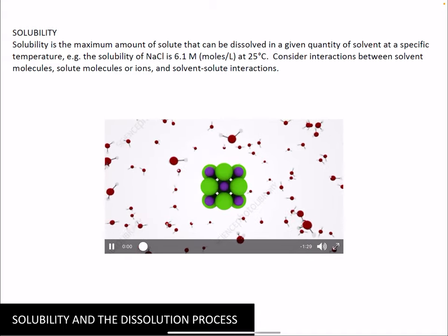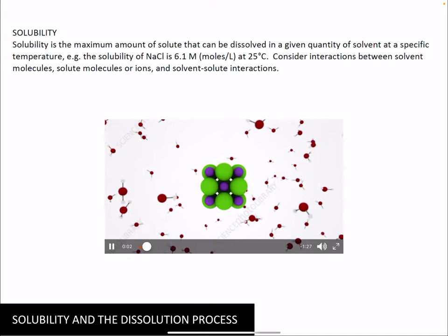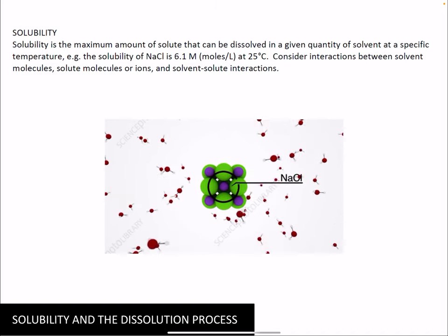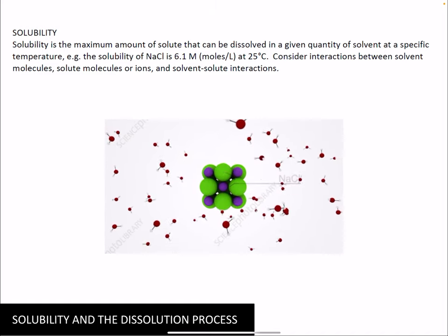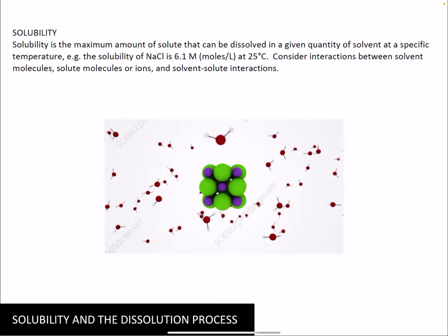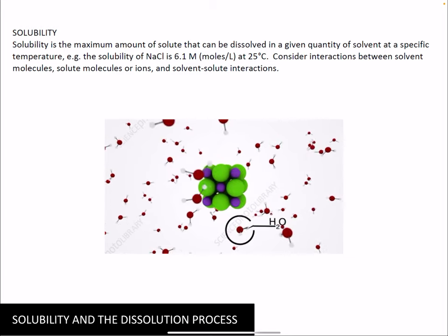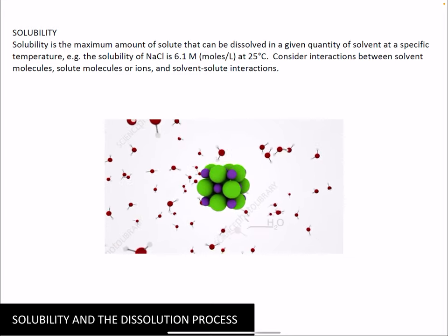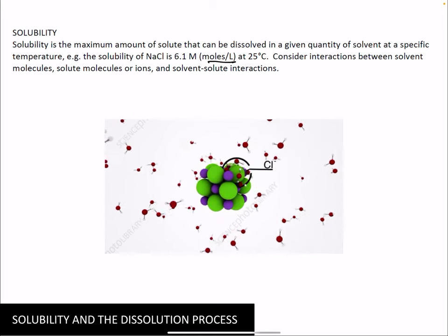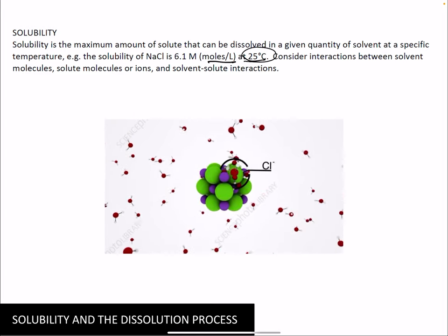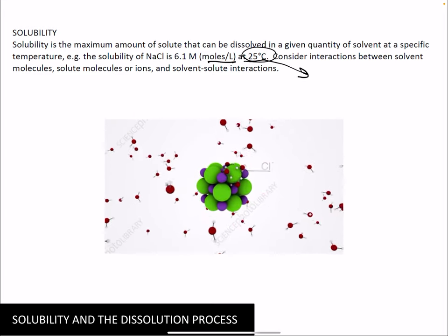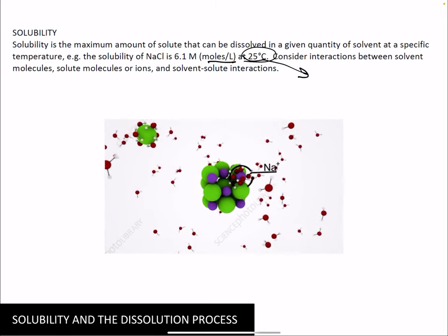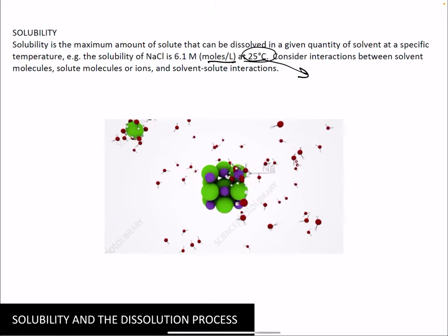Solubility is the maximum amount of solute that can be dissolved in a given quantity of solvent at a specific temperature. For example, you can dissolve 6.1 moles per liter of sodium chloride at 25°C. If you increase the temperature, you can dissolve a little bit more; if you have more solvent, more liters of water, you can dissolve more.